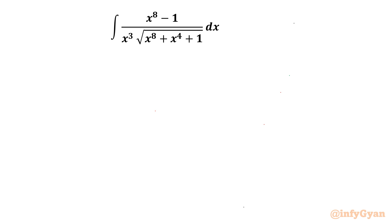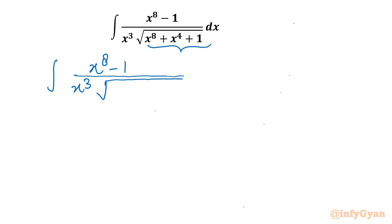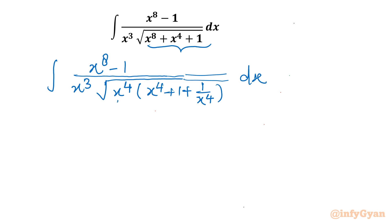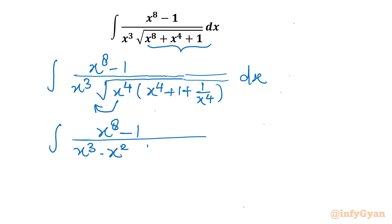I will solve using substitution method. Let's get started by taking x^4 common from the radicand. So I will write integration (x^8 - 1) over x^3, then I will put that square root. Now I will take x^4 common. Once it is common, what is left inside the bracket is x^4 + 1 + 1/x^4. Once I take x^4 out from this square root, it will become x^2.